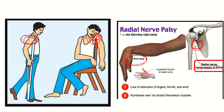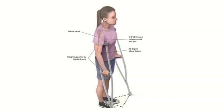The clinical features arising from crutch palsy include, first of all, wrist drop — because the radial nerve supplies the extensor surface of the wrist. There will also be sensory loss in the first dorsal interosseous and other areas supplied by the radial nerve, along with loss of extension of the fingers, wrist, and thumb.